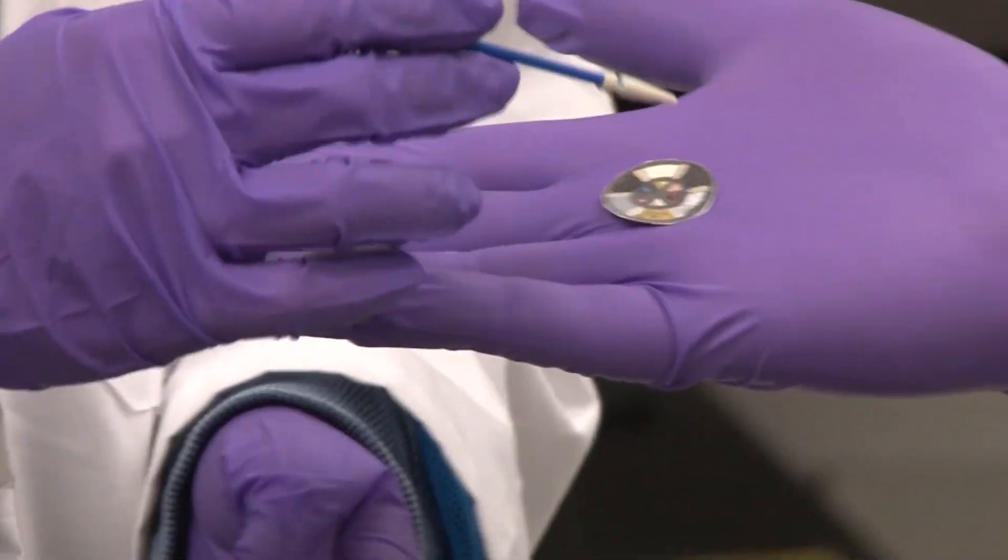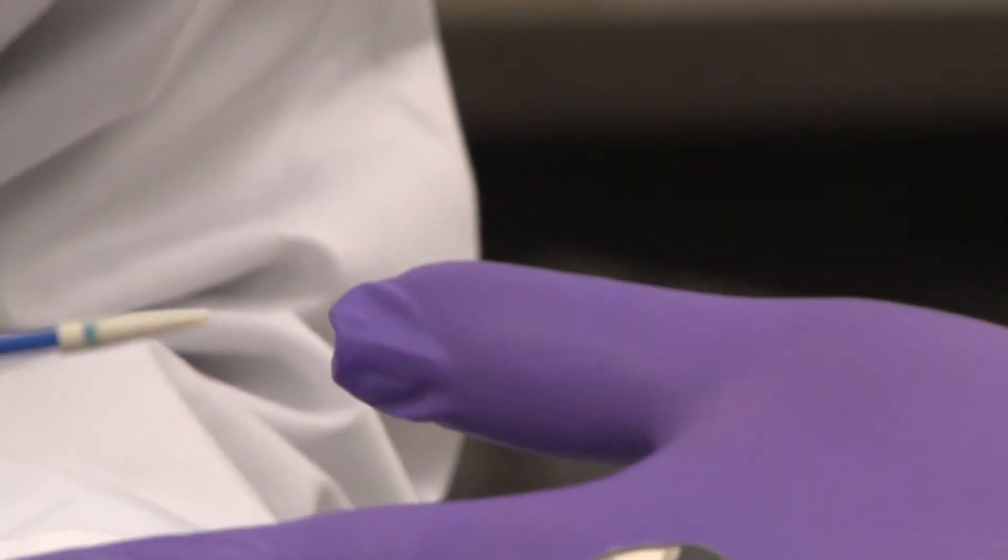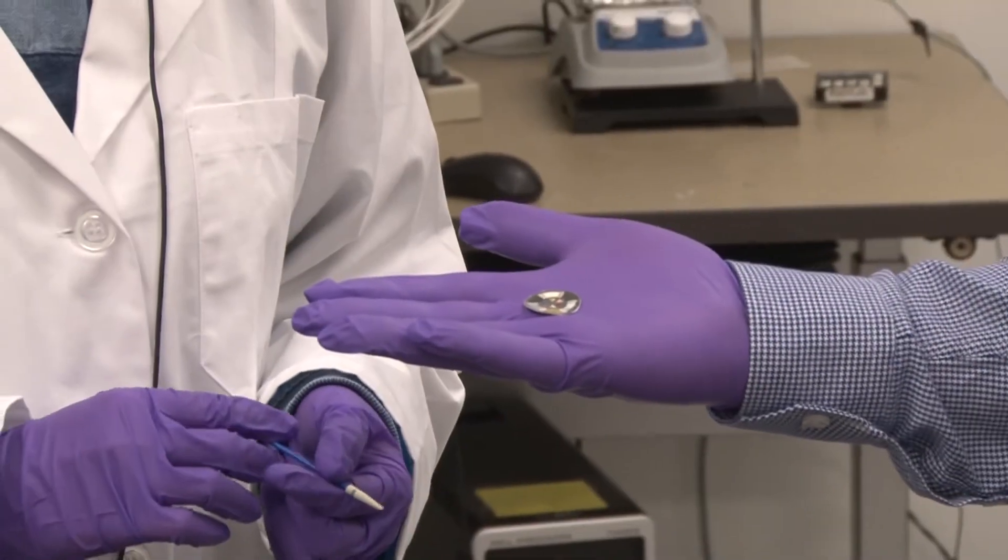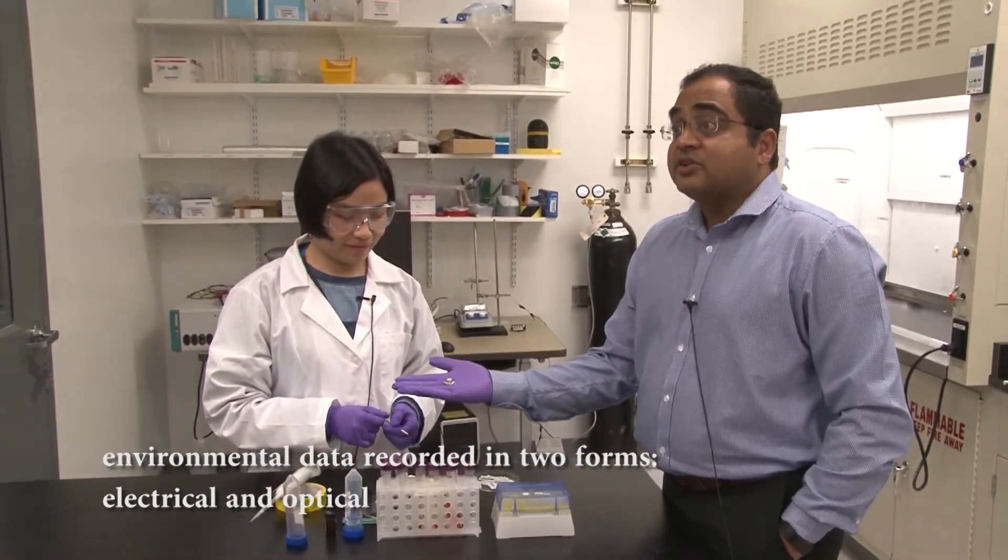We have an array of optical sensors in the middle. And on the outer circle, we have a series of nanomaterial-based sensors. Essentially this sensor can be used in what I call two modalities.